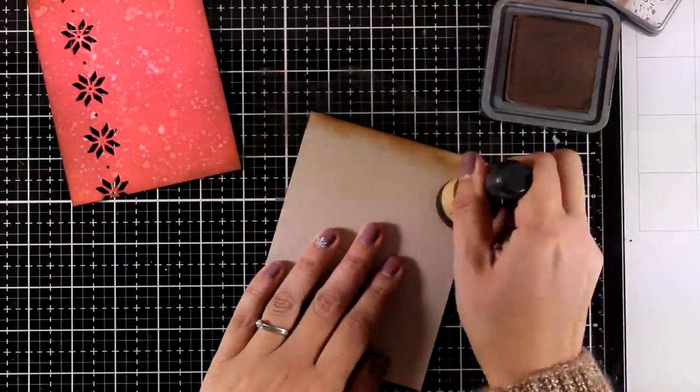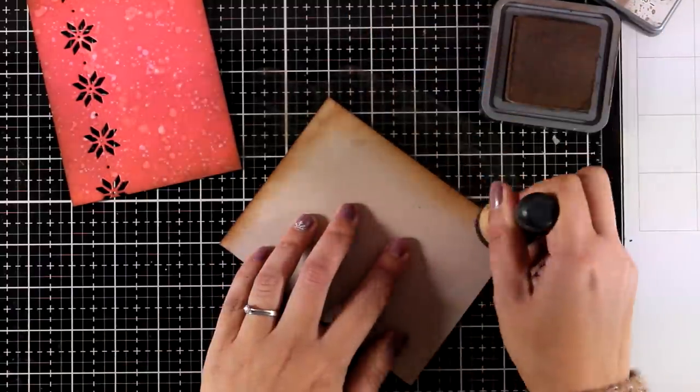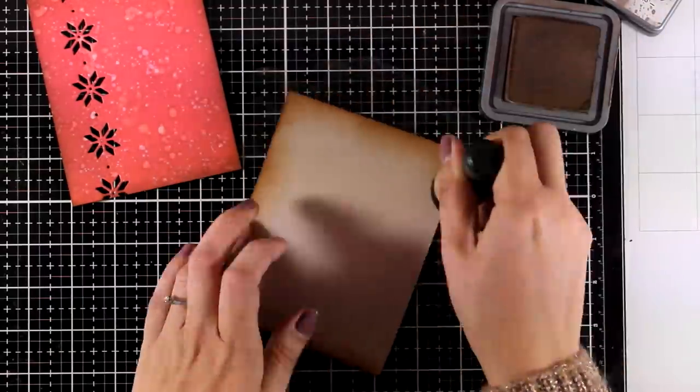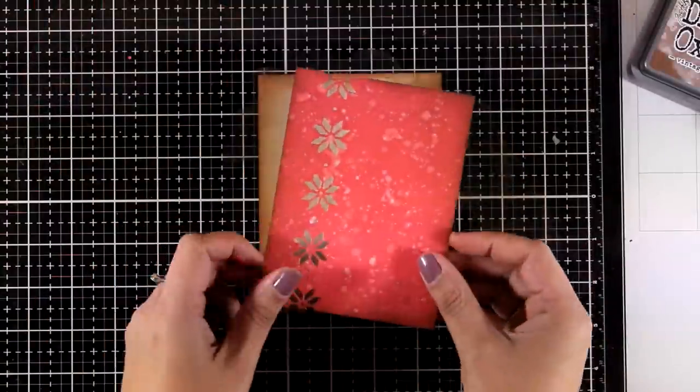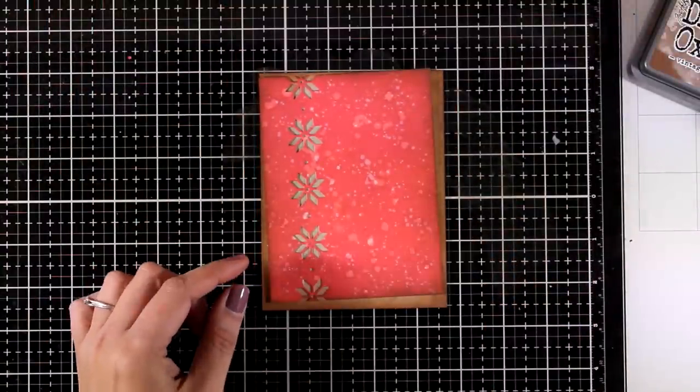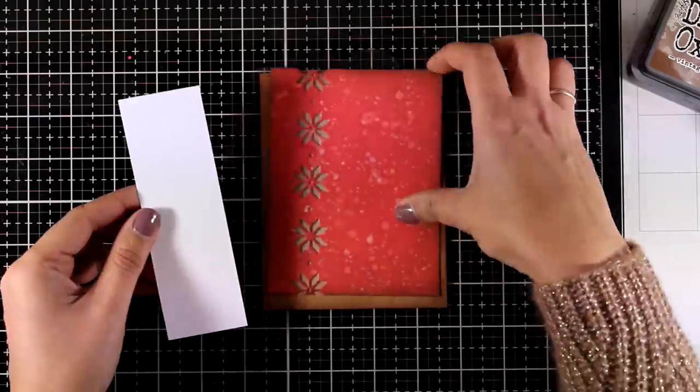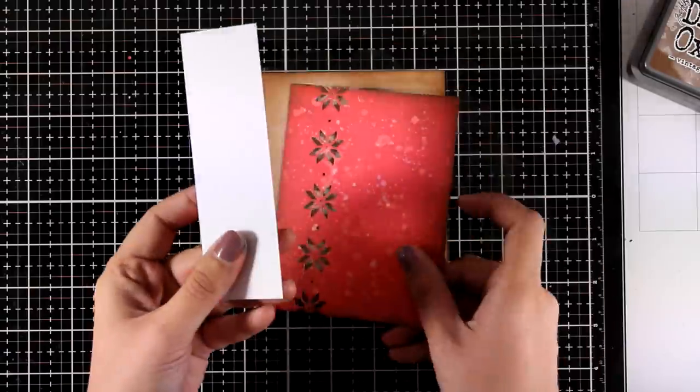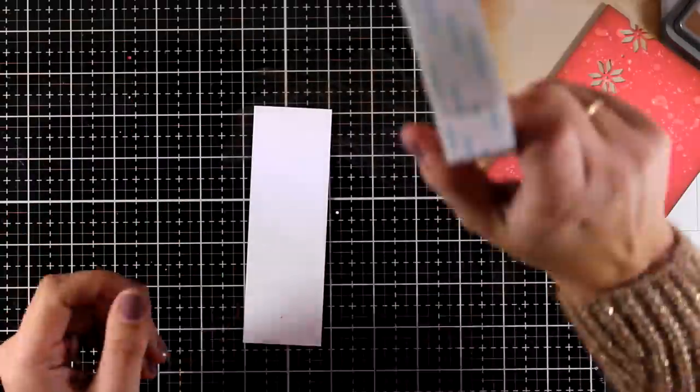Now I have a piece of four and a quarter by five and a half craft panel and this is a Neenah Desert Storm. I am going to ink up the edges again with Vintage Photo and you can see here how it looks when I place one panel on top of the other. Now at the back you can add a white piece of paper, you can add glitter paper like I will do later on, you can also go with gold. Lots of options here.